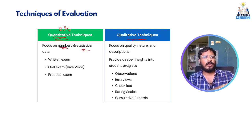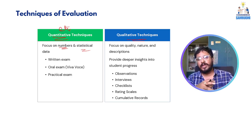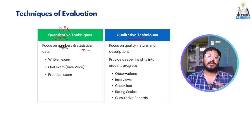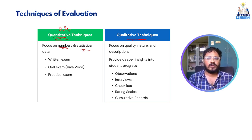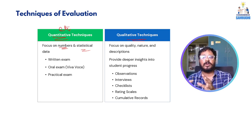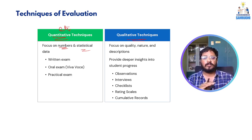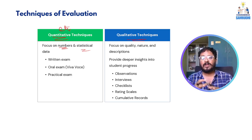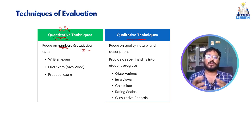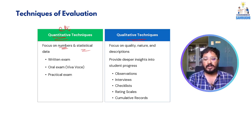Quantitative techniques include exam marks, practical marks, sports achievements. Qualitative techniques are different — they include observation, one-on-one interaction. Performance may be poor or good — there can be situations for one-on-one parent-teacher meetings. These are all various quantitative and qualitative techniques of evaluating a student.